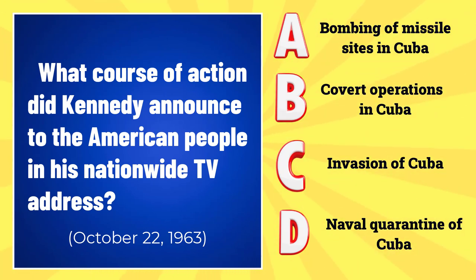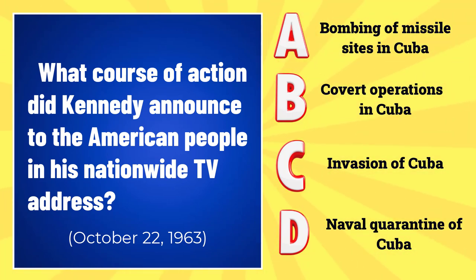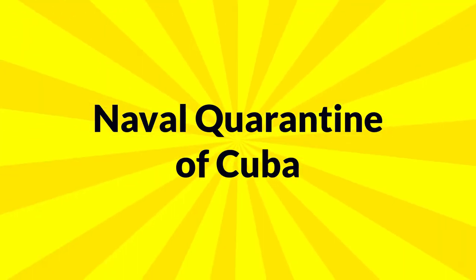What course of action did President Kennedy announce to the American people in his nationwide TV address on October 22, 1962? A, bombing missile sites in Cuba. B, covert operations in Cuba. C, invasion of Cuba. Or D, naval quarantine of Cuba? The answer is a naval quarantine of Cuba. Kennedy believed a naval quarantine would at least buy him some time to find a resolution to this crisis.